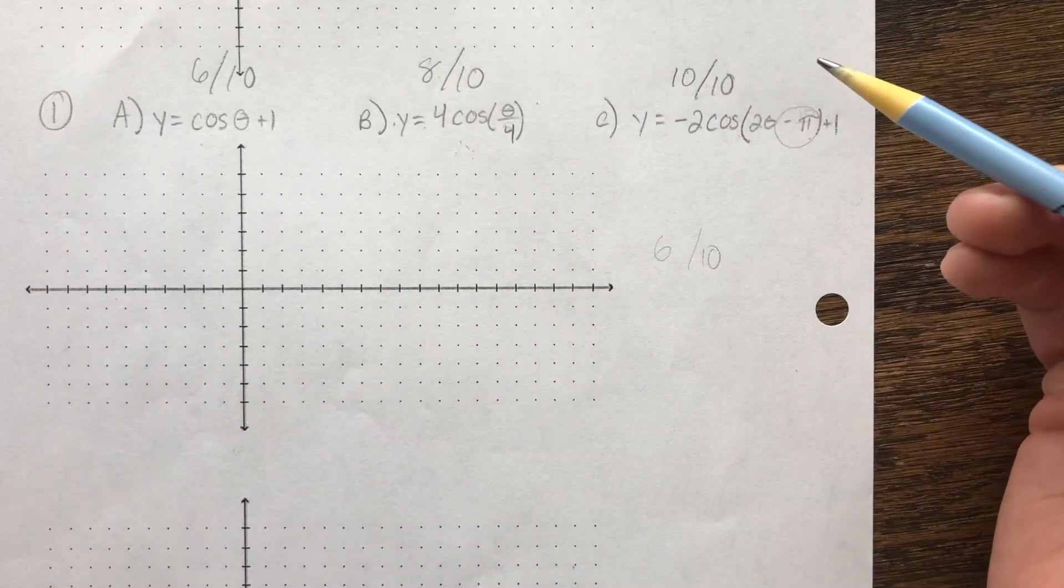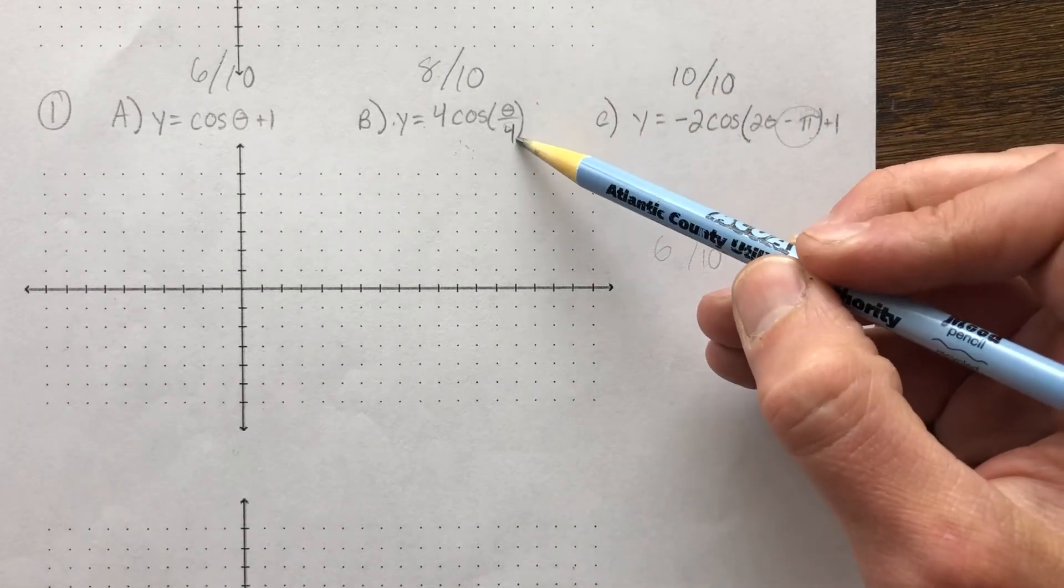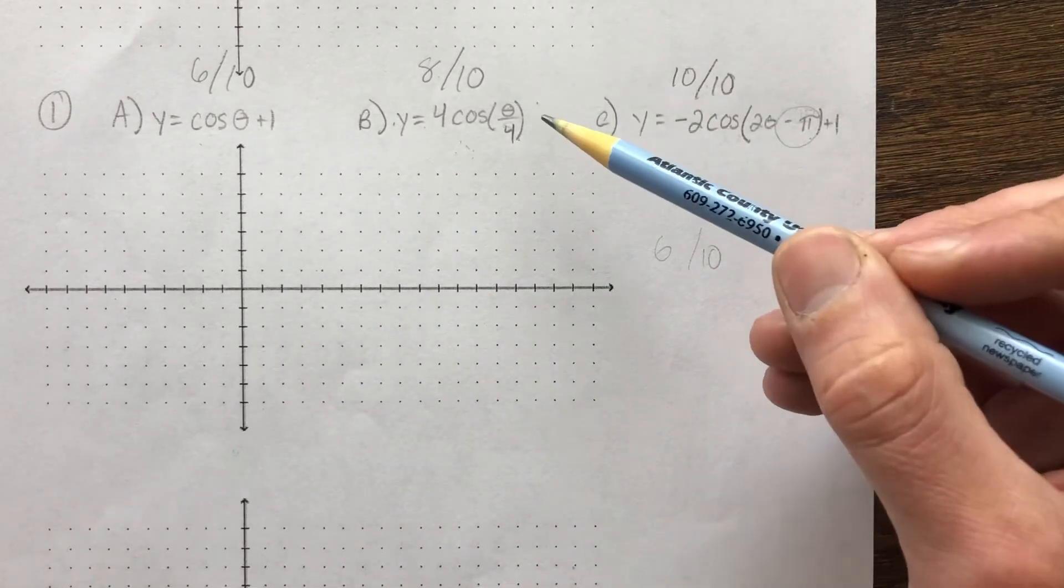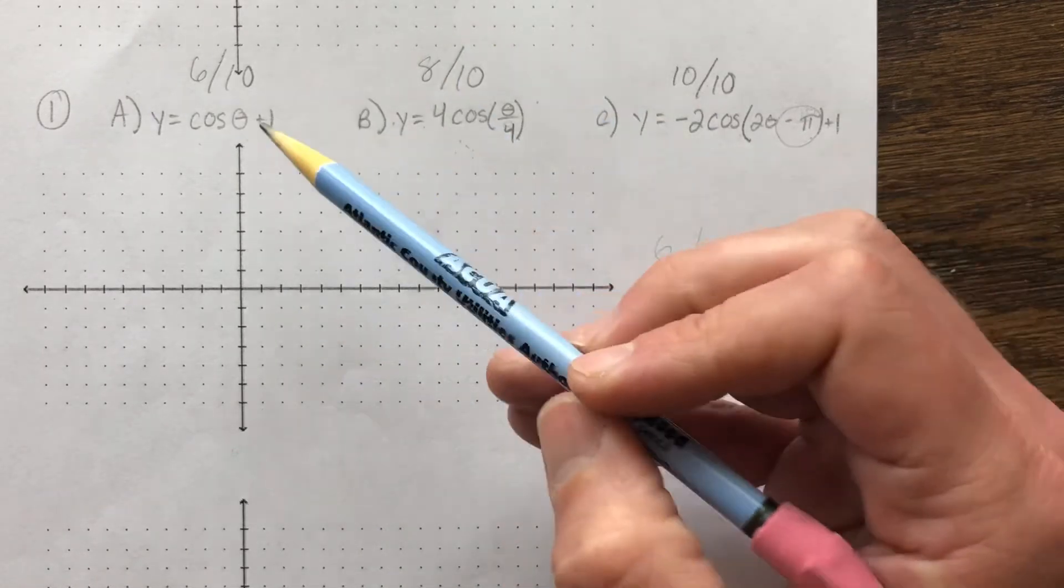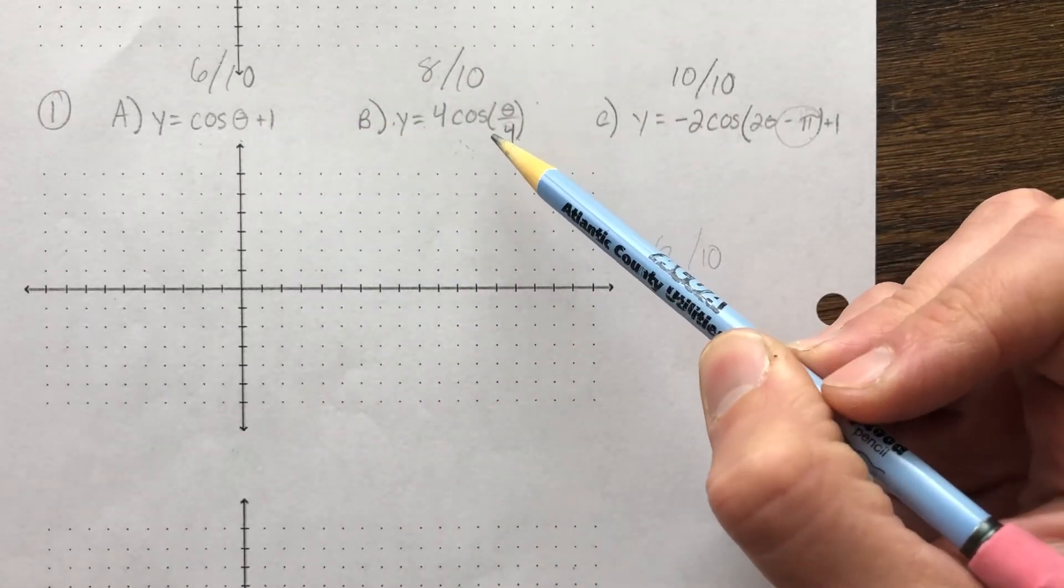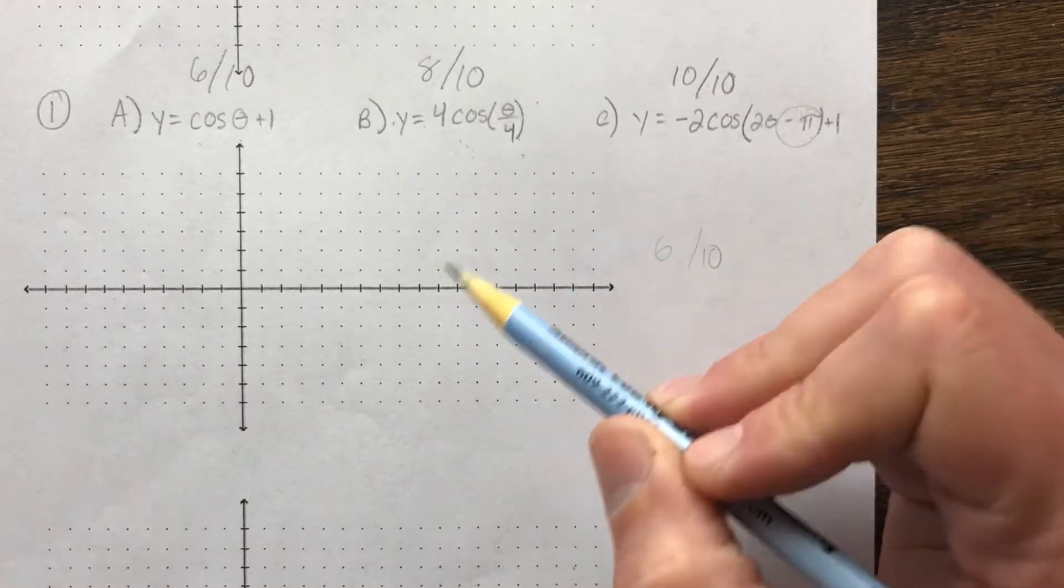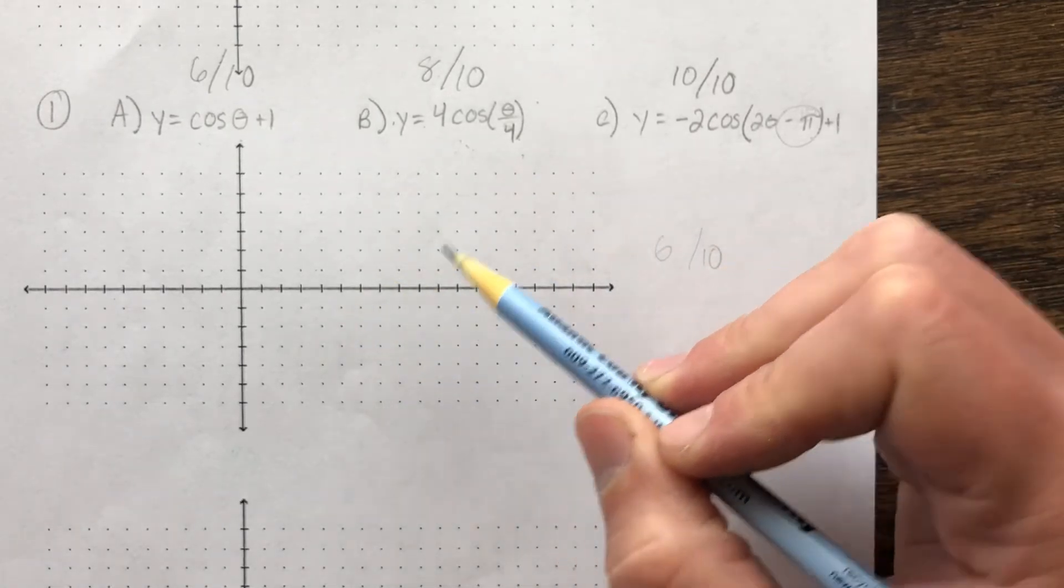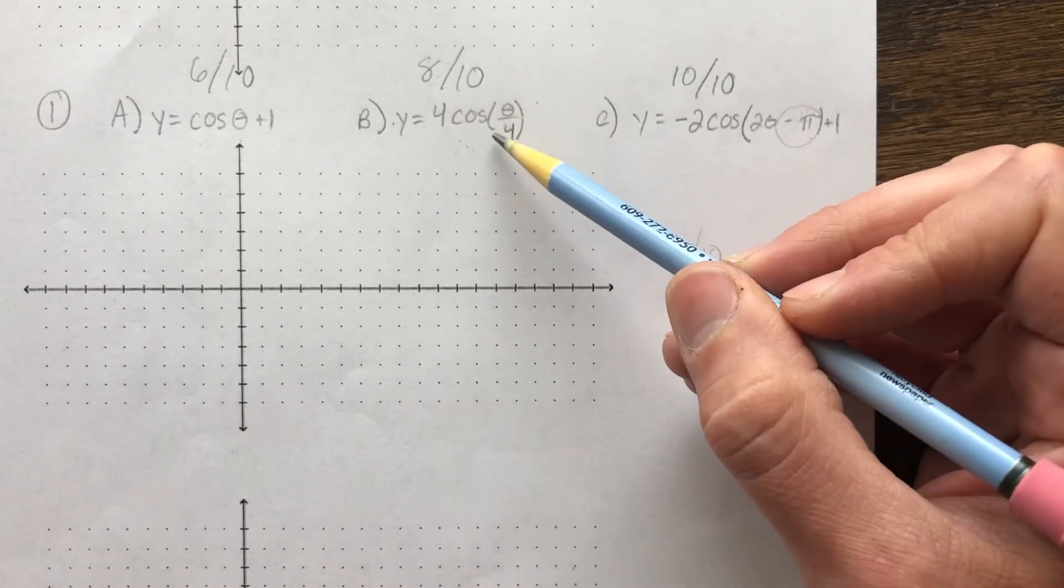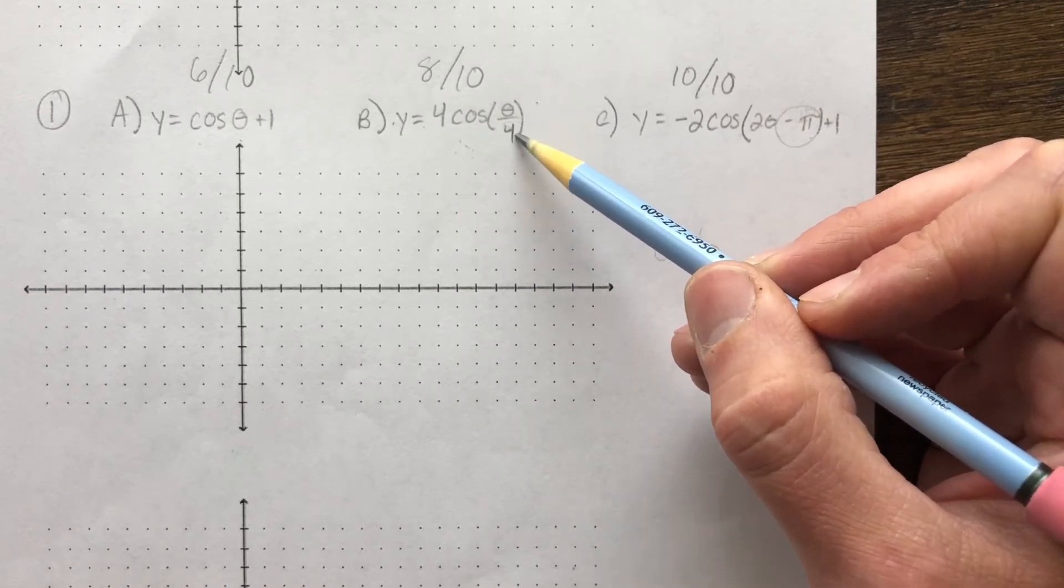Okay, if you struggle with phase shift and you struggle with period change and you have an issue with labeling and all that kind of stuff, then maybe you go with level A. Because if you mess up the period and you mess up the increments and you mess up your graph, then again you may only get four or maybe five points out of this, maybe less depending on how bad it is.